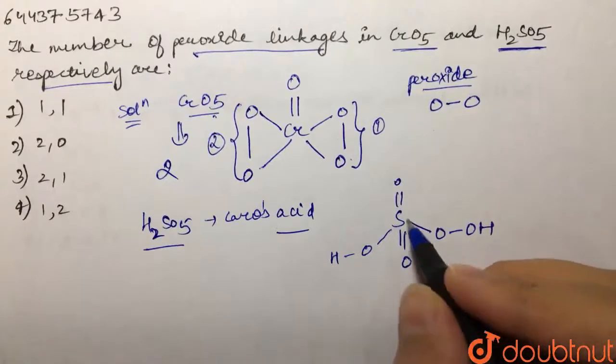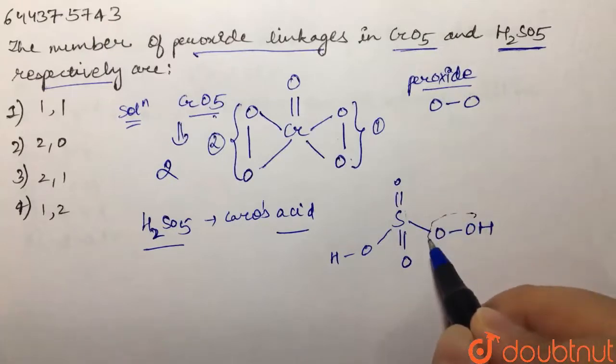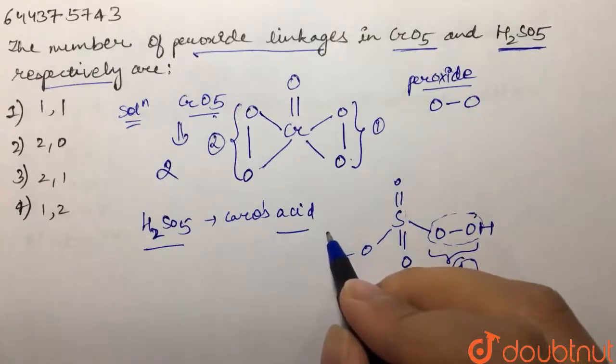So over here we can see that oxygen single bond oxygen is this part. So this is our peroxide linkage and there is only one peroxide linkage in case of H2SO5.